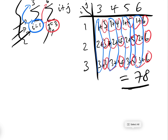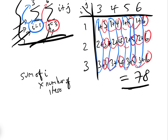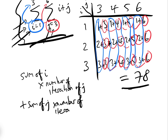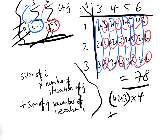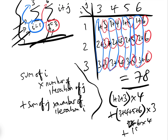In general, the double summation equals the sum of the i's — which is one plus two plus three — times the number of iterations of j, which is four, plus the sum of the j's — which is three plus four plus five plus six — times the number of iterations of i, which is three. So that's six times four plus eighteen times three, which gives us 24 plus 54 equals 78. The same answer.